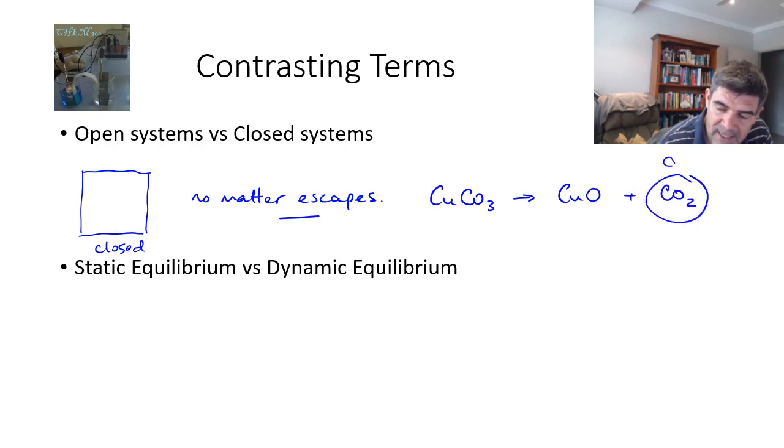We can't have any equilibrium being established when one of our products is escaping from the system. It can't then be able to recombine with one of the other products in order to reform the reactants. So one very key component of an equilibrium system is it must be a closed system.